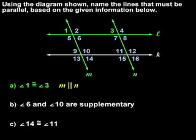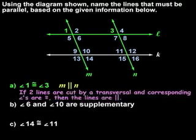Therefore, lines M and N must be parallel because if two lines are cut by a transversal and corresponding angles are congruent, then the lines are parallel.